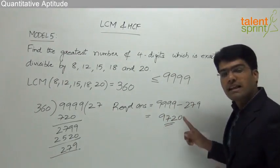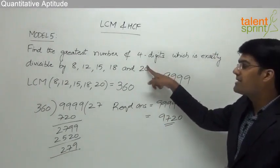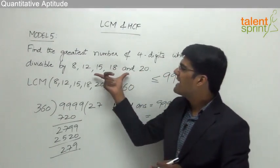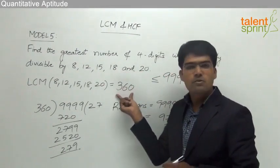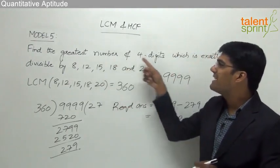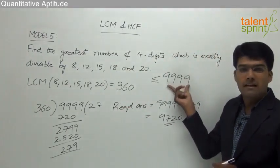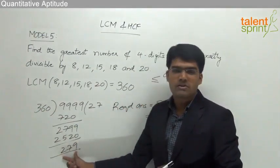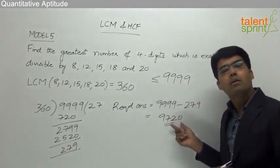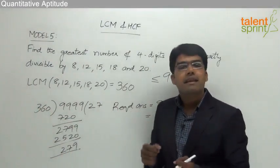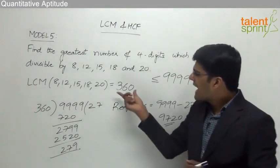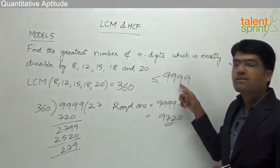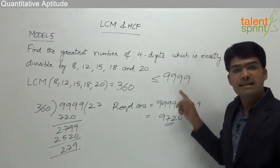When we subtract the remainder 279 from 9999, we get the required answer: 9999 minus 279 equals 9720. So 9720 is the largest four-digit number divisible by 8, 12, 15, 18, and 20. To summarize: take the LCM of the given values (360), then divide 9999 by 360 to get remainder 279, and subtract that remainder from 9999.